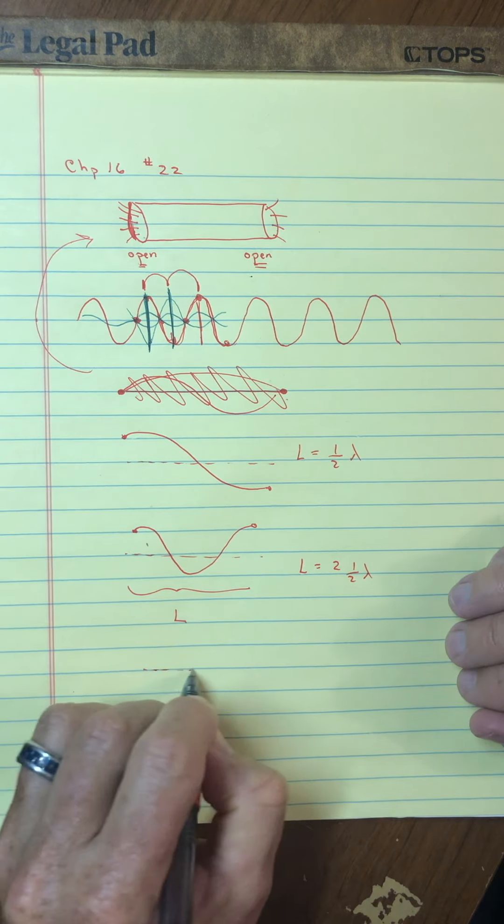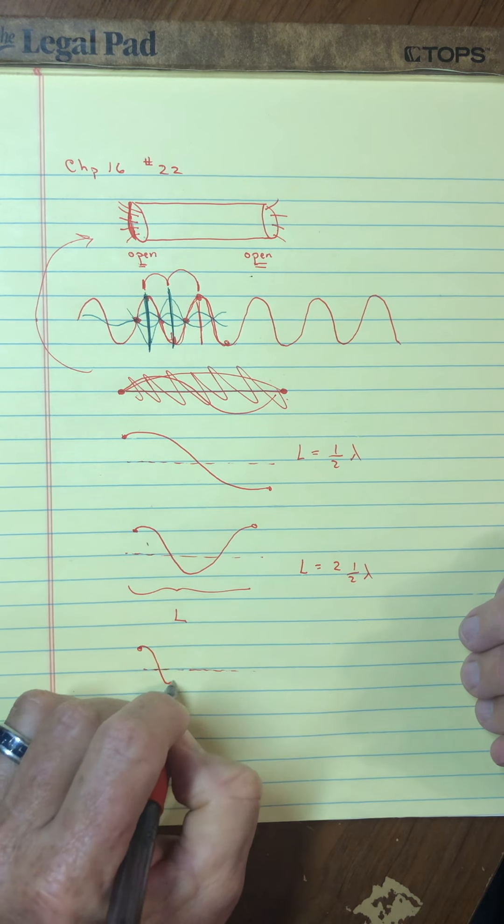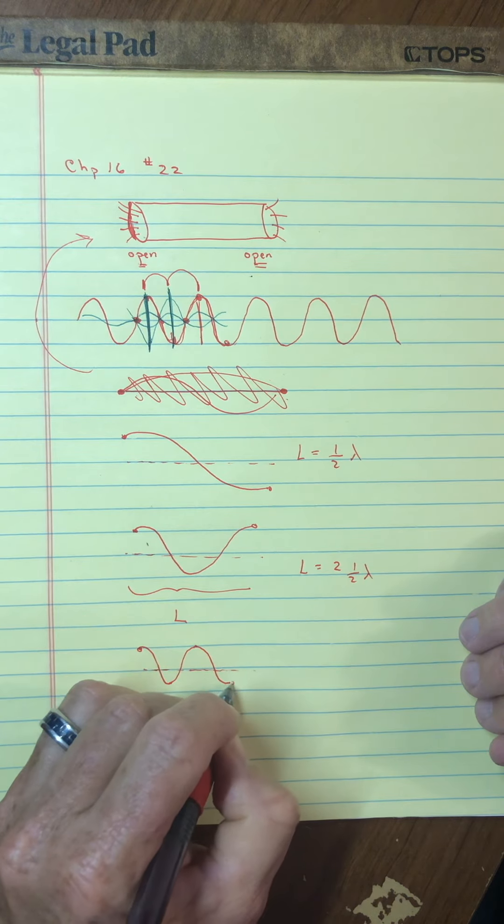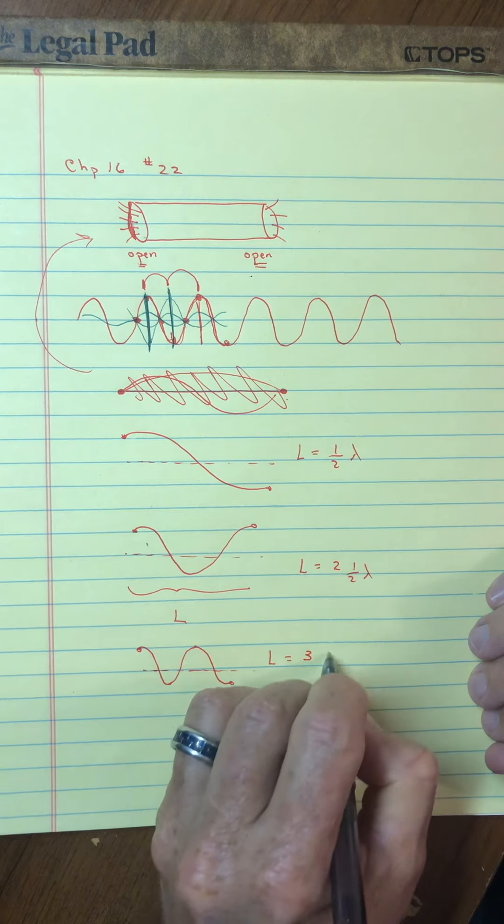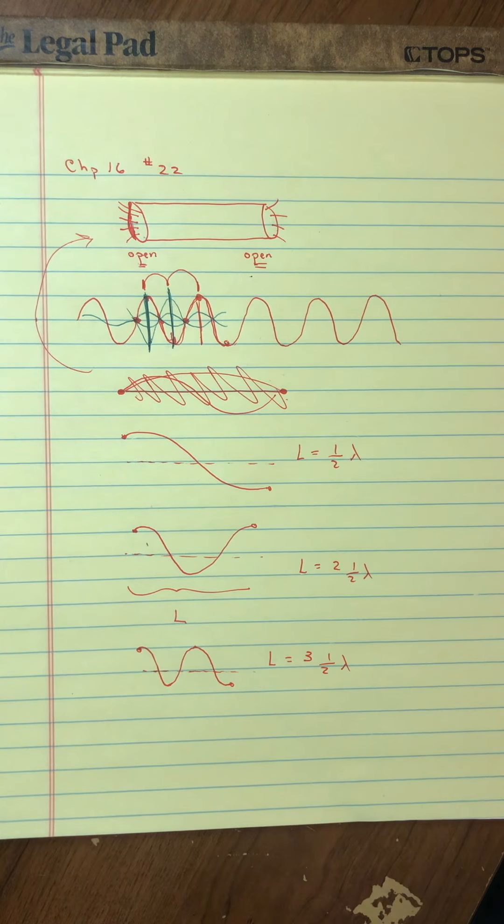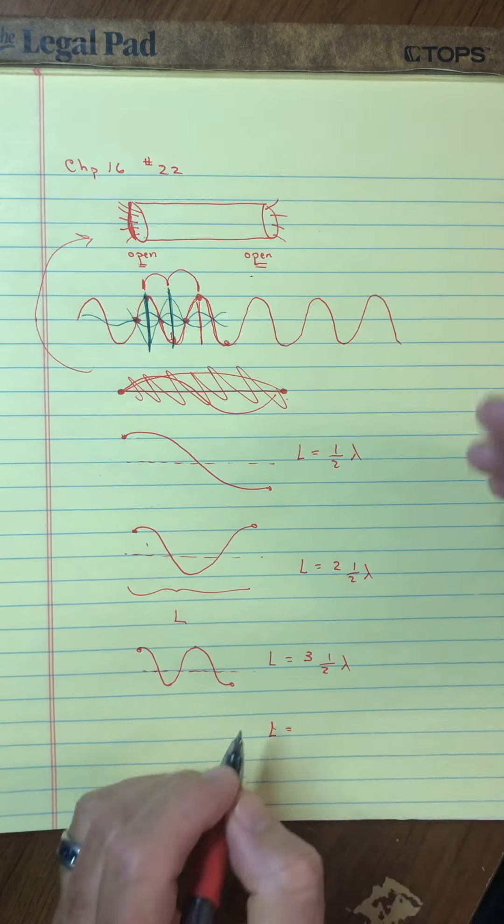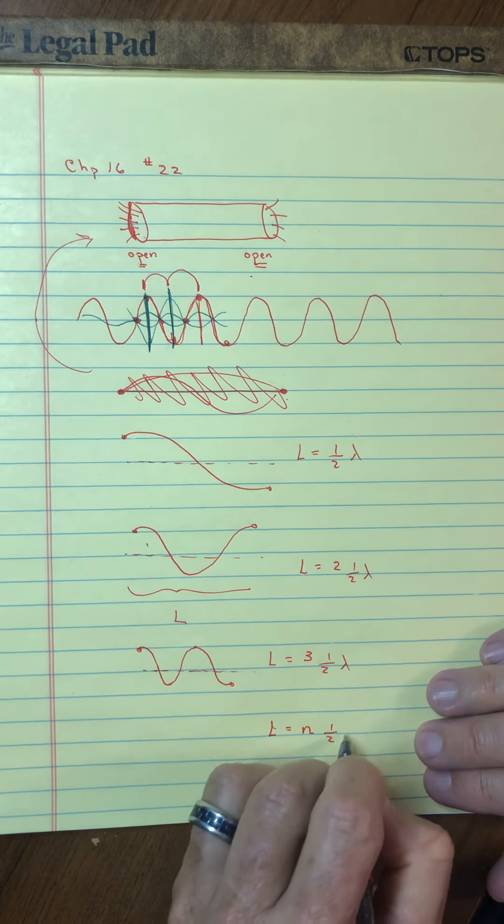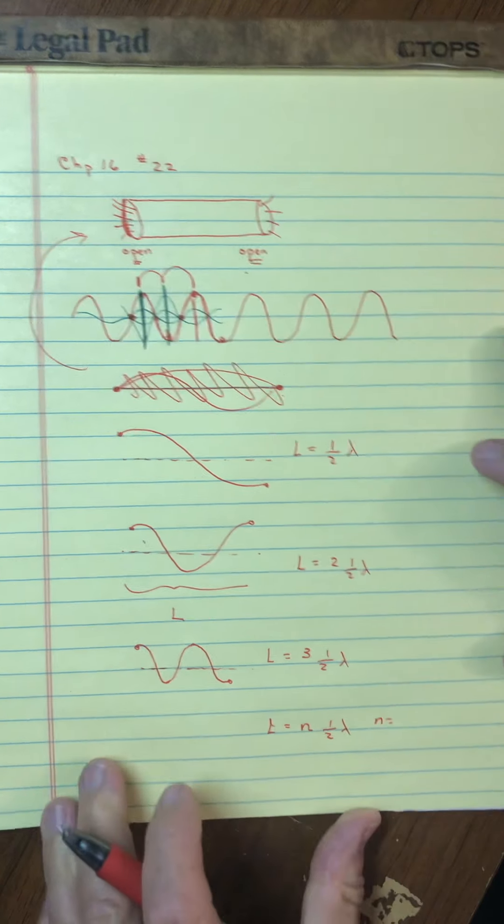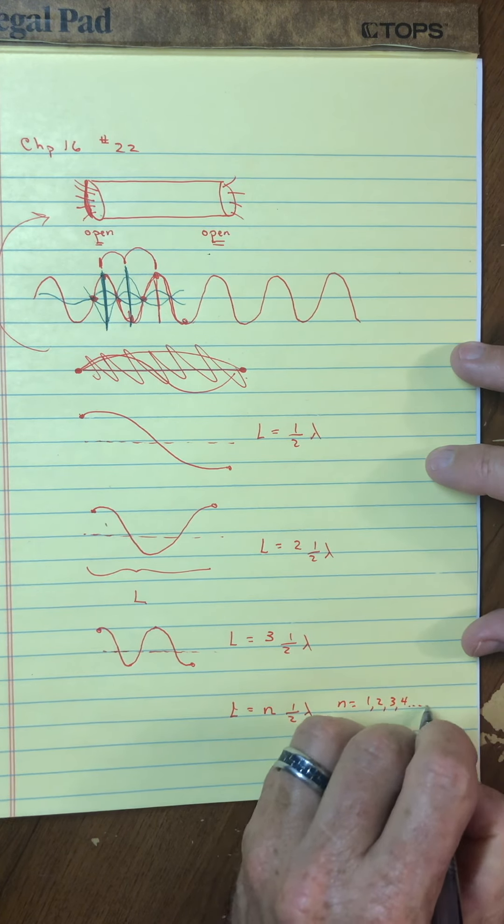Because if I continue on with this pattern, it could look something, there's a first anti-node, second anti-node, and then the end is the third anti-node. Okay, so L here would be three half wavelengths. So, you're beginning to see a pattern that would say the length of the tube would be some integer, let's say N, half wavelengths, where N can be a number 1 or 2 or 3 or 4 dot dot dot dot.